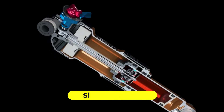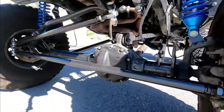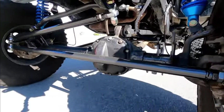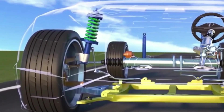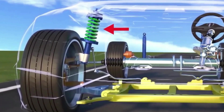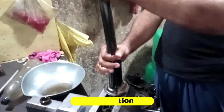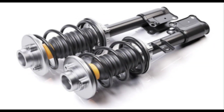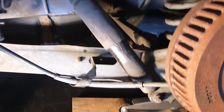Single function: shocks have a single function — to control the movement of the suspension springs. They don't support the weight of the vehicle or provide structural rigidity like struts do. Shocks are usually mounted separately from the suspension springs and are connected to the vehicle's chassis and suspension components.